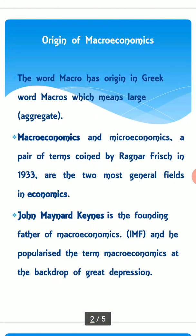First of all, we will see the origin of macroeconomics. The word macro has its origin in the Greek word 'macros,' which means large or aggregate. The term macroeconomics and microeconomics was coined by Ragnar Frisch in 1933. These are two most general fields in economics. In fact, John Maynard Keynes is the founding father of macroeconomics, and he popularized the term macroeconomics at the backdrop of the Great Depression.